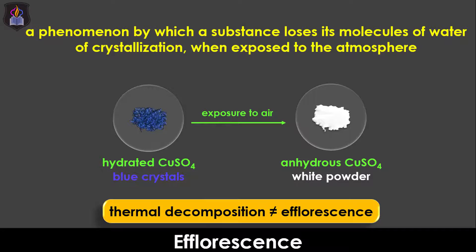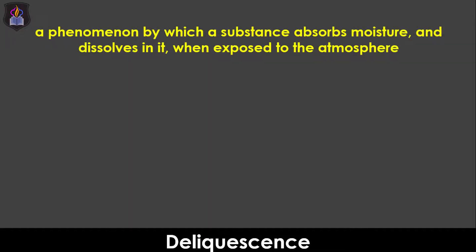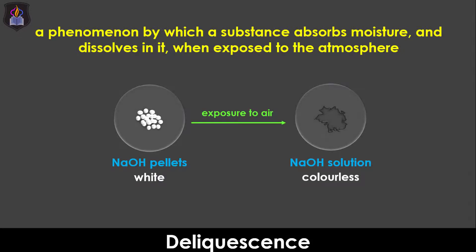The next behavior we are considering is deliquescence. We can define deliquescence as a process by which a substance absorbs moisture and dissolves in it to form a solution when exposed to the atmosphere. The absorption of the moisture from the air will make the mass of the substance increase after deliquescence, even though it forms a solution, because its new mass will be made up of the mass of the substance plus the mass of the moisture absorbed.